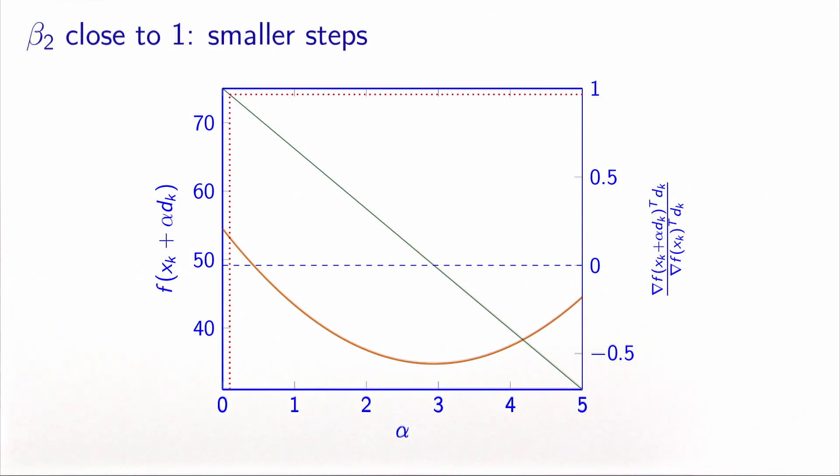Now if you select a beta two which is close to one, like here, we have this line here. Well, only very small steps will be rejected. So we are allowed to make smaller steps.